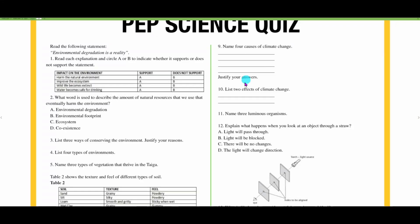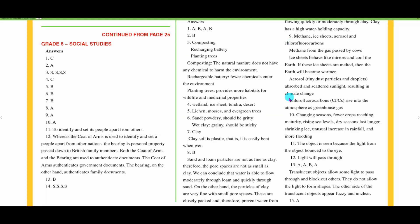Number ten: list two effects of climate change. Changing seasons, fewer crops reaching maturity, rising sea levels, dry seasons last longer, shrinking ice, unusual increase in rainfall and more flooding.